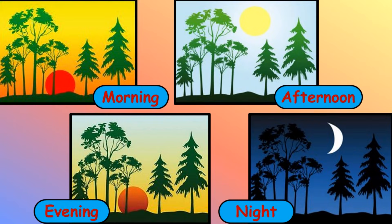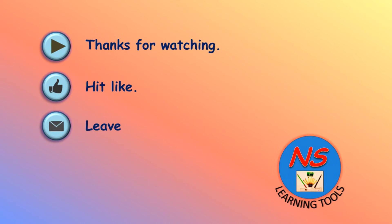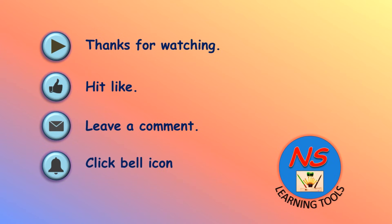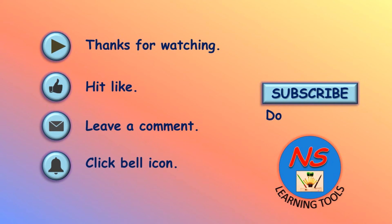So, in this video we see that as the light source changes its position, the shadow also changes its position and size, which divides the day into four different time intervals. If you like this video, please subscribe to our channel.